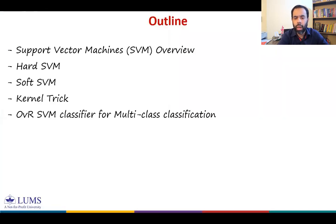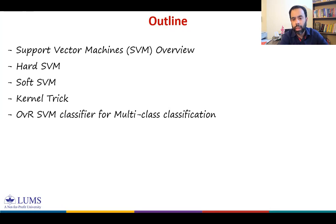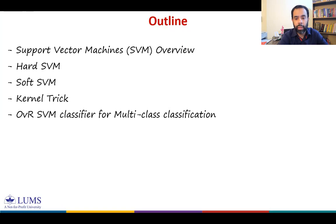SVMs are currently among the best performers for a number of classification tasks. For example, they are the best known classifier on well-studied handwritten character recognition tasks. They are also very widely used in bioinformatics due to their high accuracy, their ability to deal with high-dimensional data, and the flexibility they offer in modeling diverse sources of data.